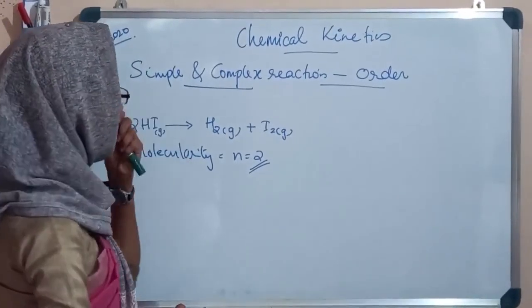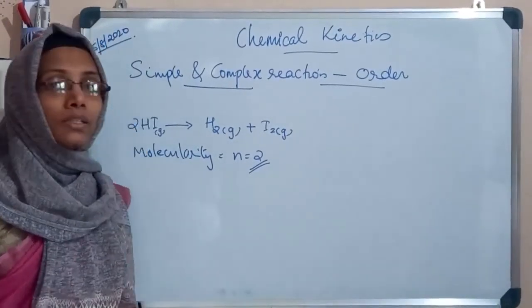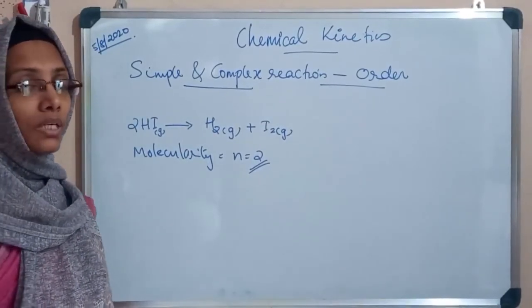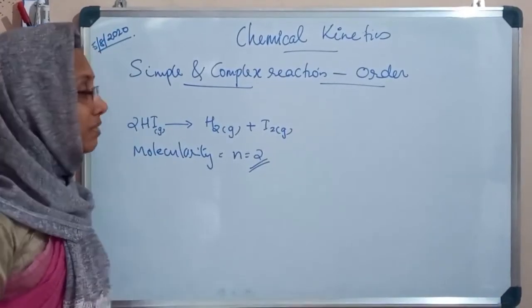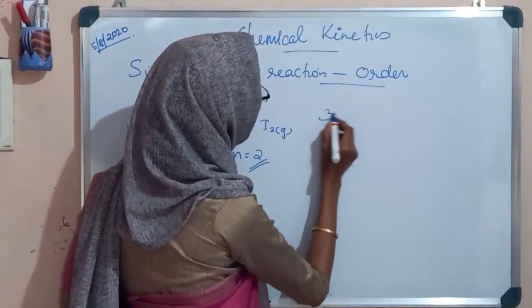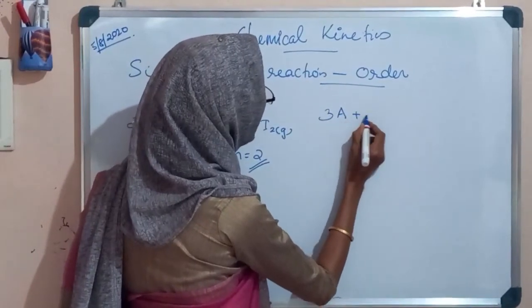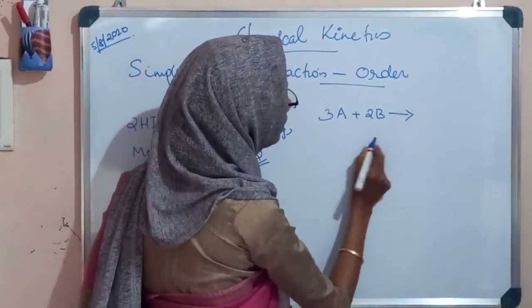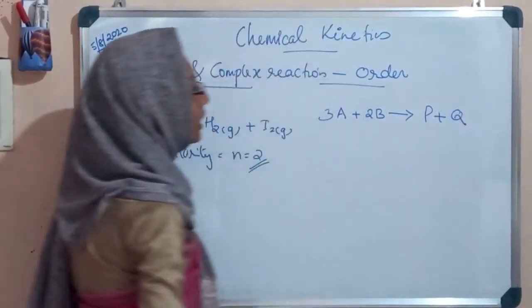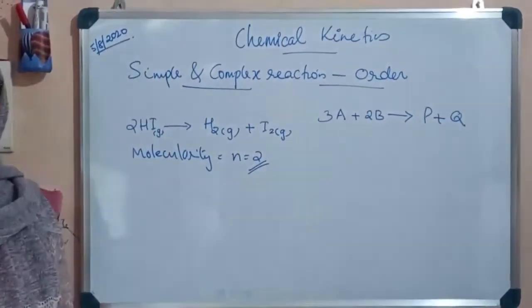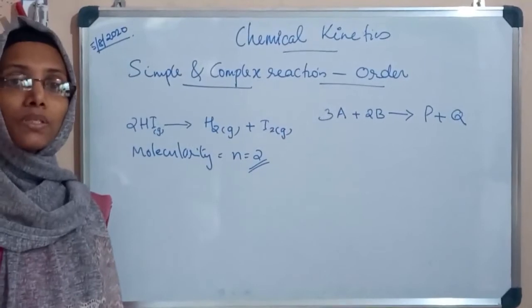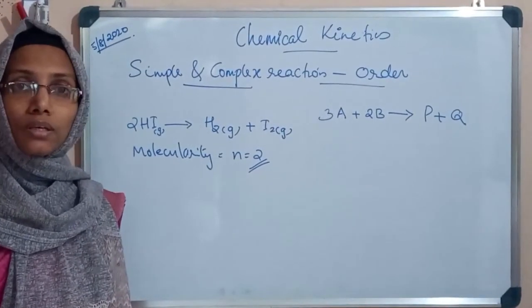A complex reaction means a reaction that takes more than one step for completion. For example, a reaction where three molecules of A and two molecules of B react together to form products. This reaction involves more than one step, and each step is known as an elementary reaction.